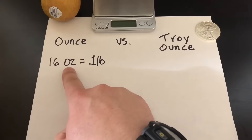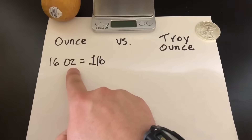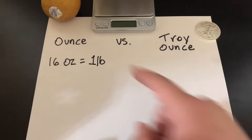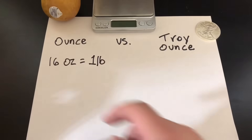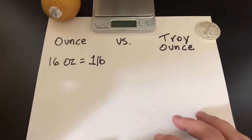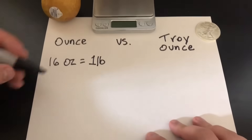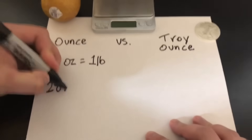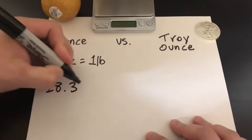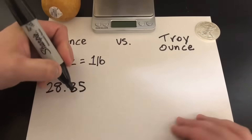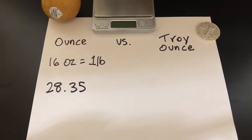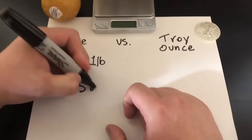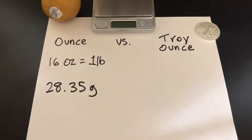You'll notice I use the abbreviation OZ, because that's the abbreviation for regular ounces. We can also break regular ounces down into grams — there are 28.35 grams in a regular ounce. So we've got our pounds and grams breakdown.